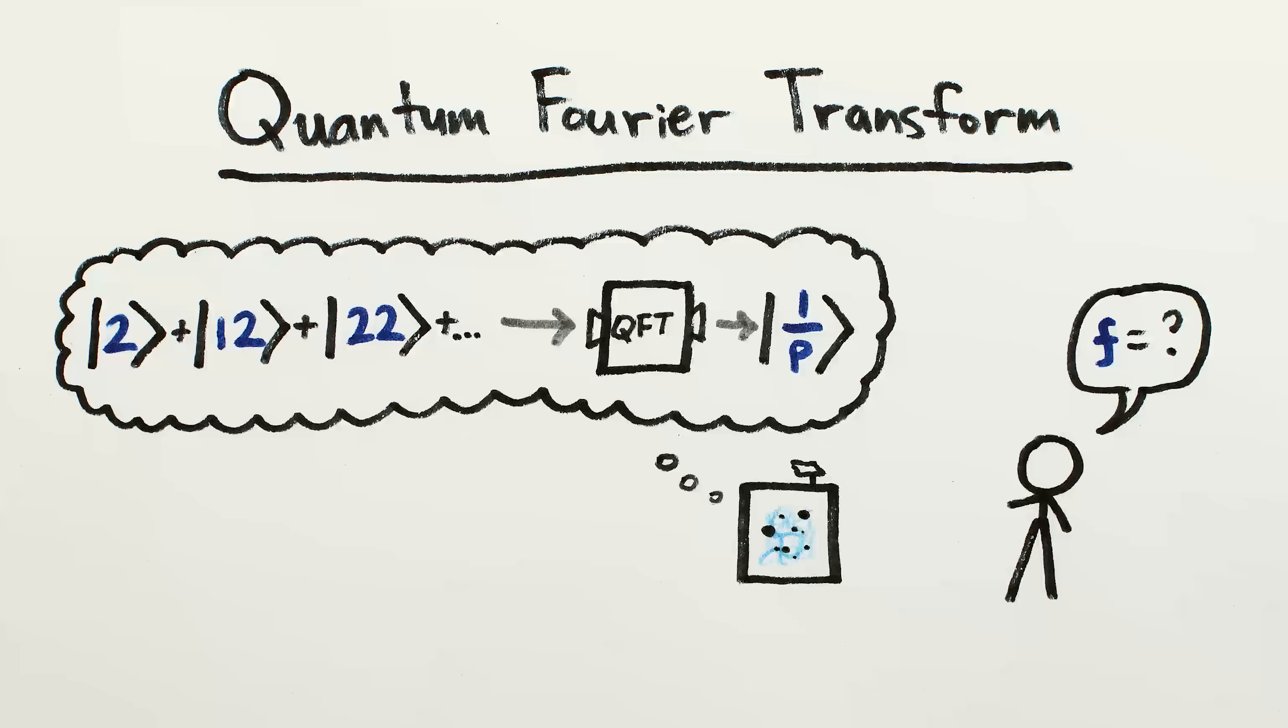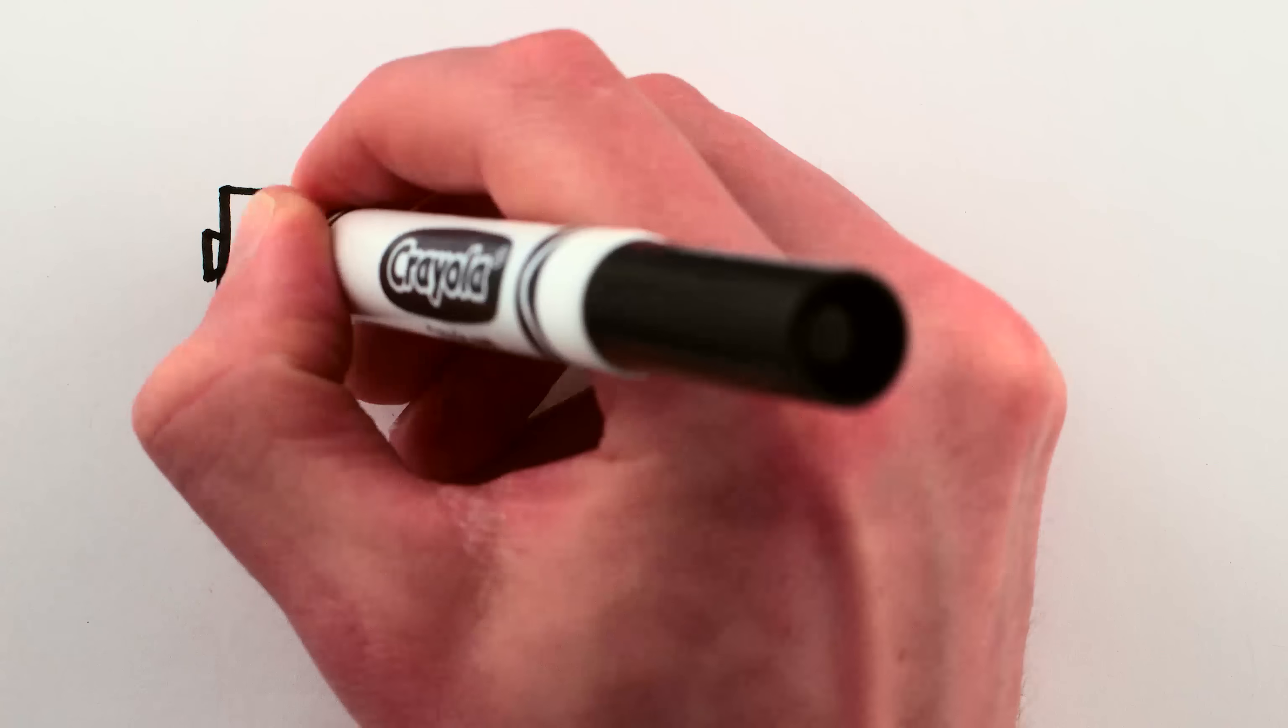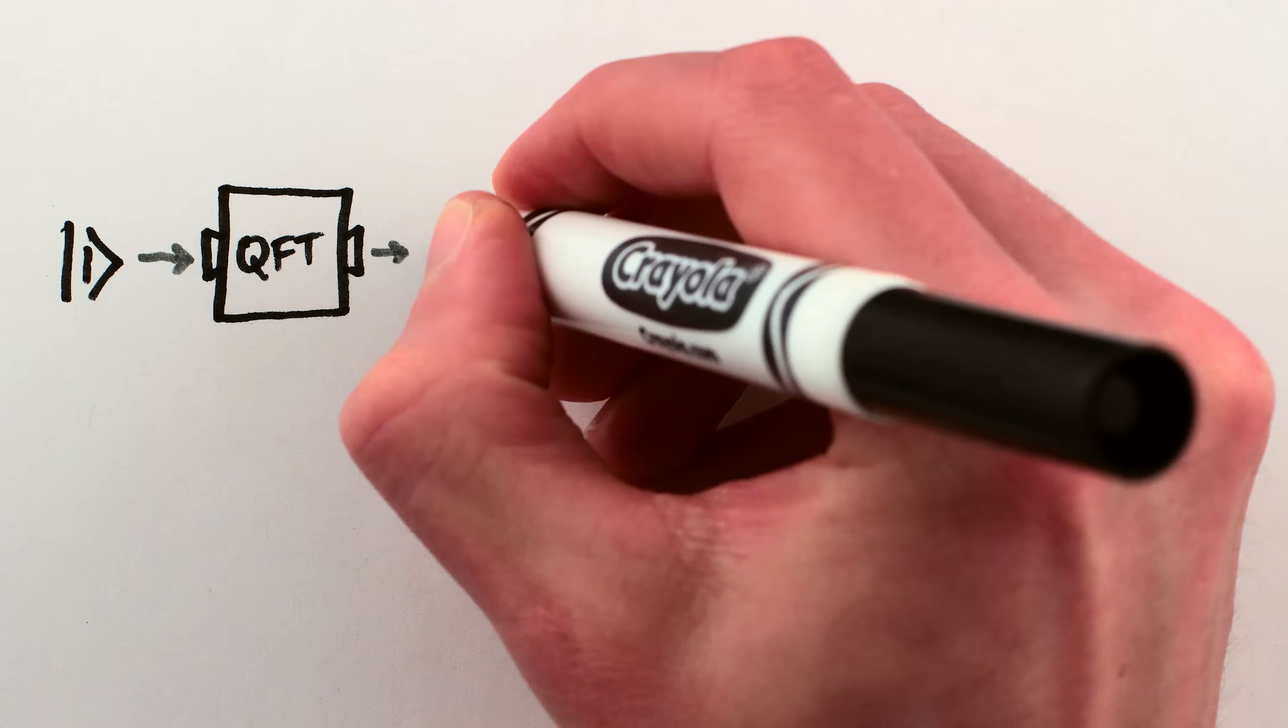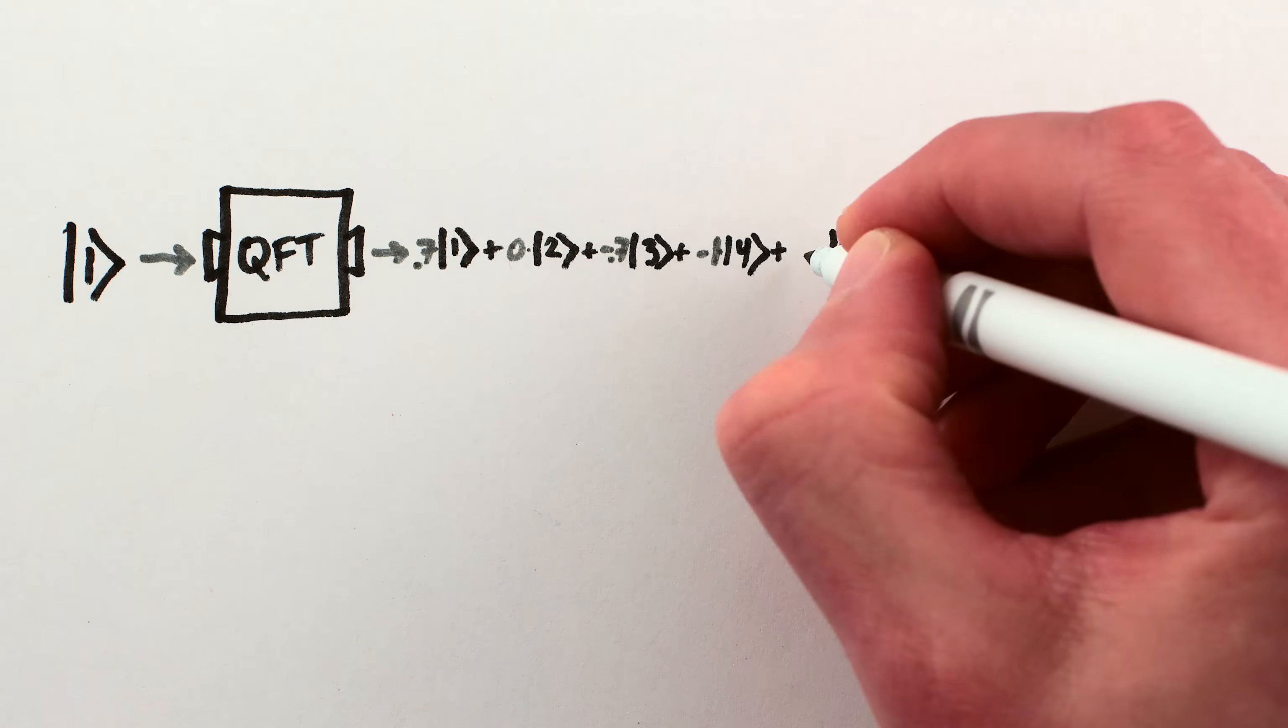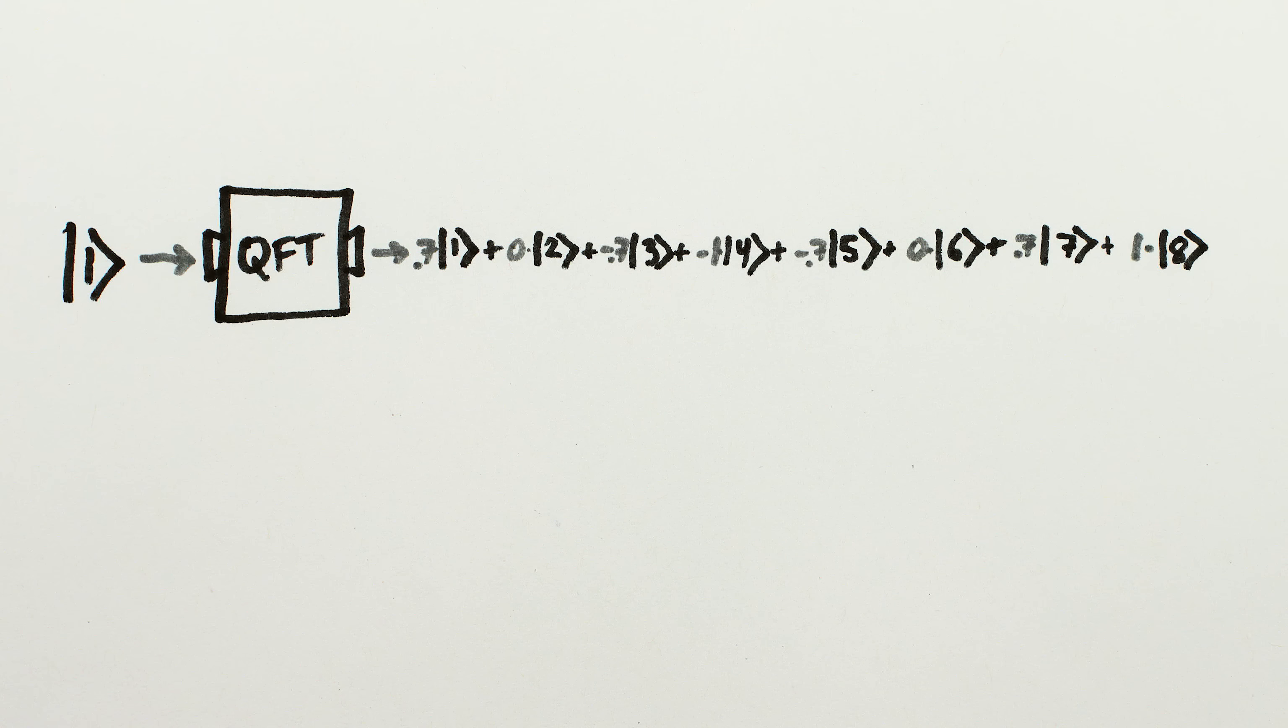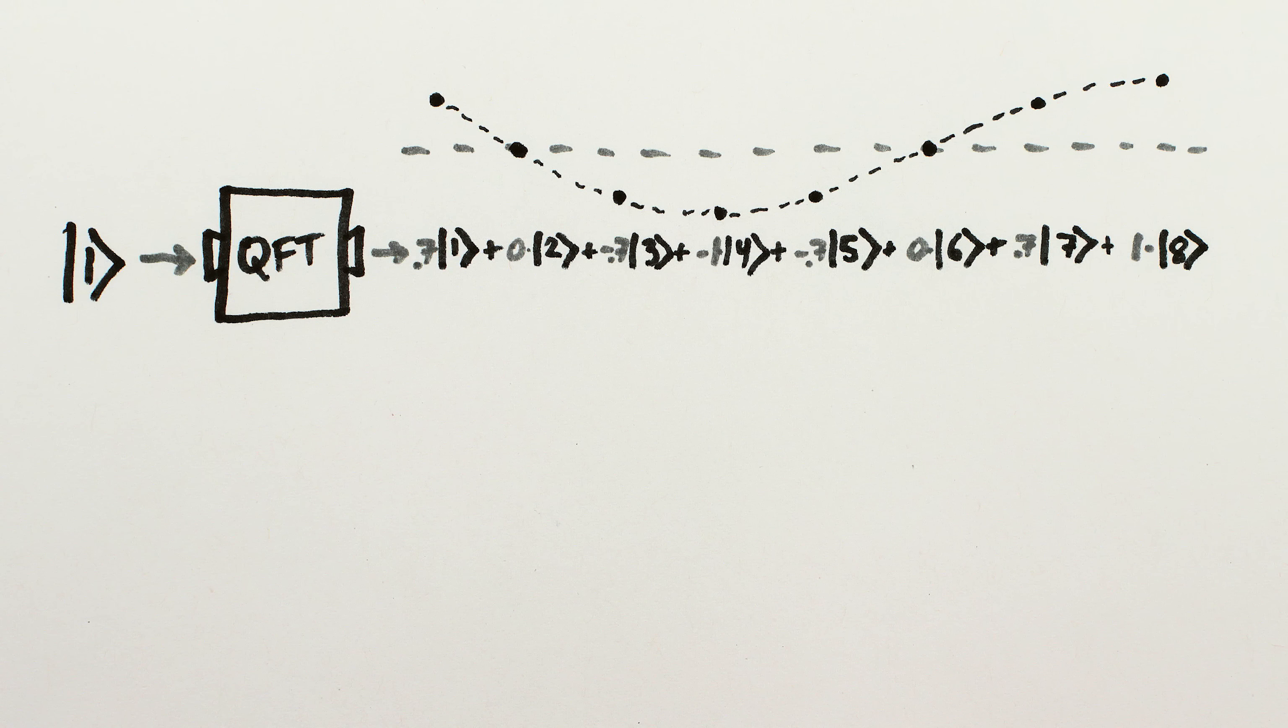Which we can finally measure to get the actual output of the computation, 1 over P. So how does the quantum Fourier transform perform this magic? Well, if you input a single number into the quantum Fourier transform, it'll give you a superposition of all other numbers, but not any old superposition. A superposition where the other numbers are all weighted by different amounts, and those weights look roughly like a sine wave with the frequency of the single number we put in.